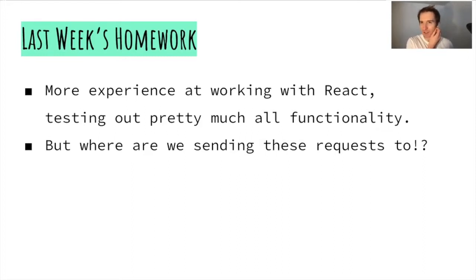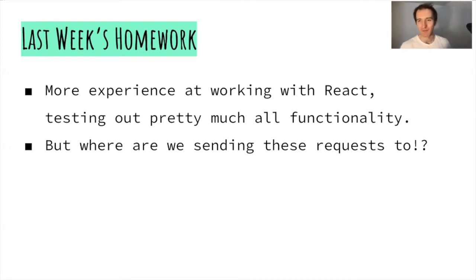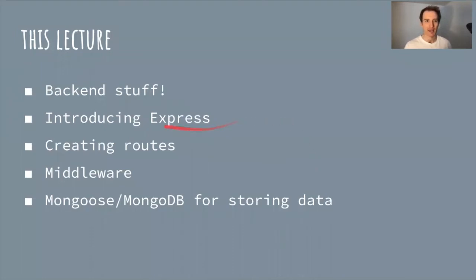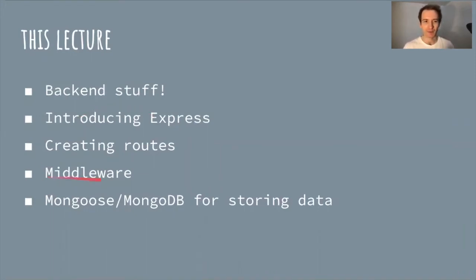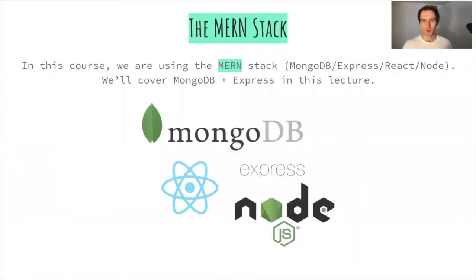We've been making GET requests to backends throughout the course, asking for lists of resources. But that side of things has remained a mystery. In this lecture, we'll be talking about the backend. We'll be introducing a library called Express — a JavaScript library that runs on Node — and we'll be creating routes, talking about middleware, and also introducing MongoDB, which is a database.